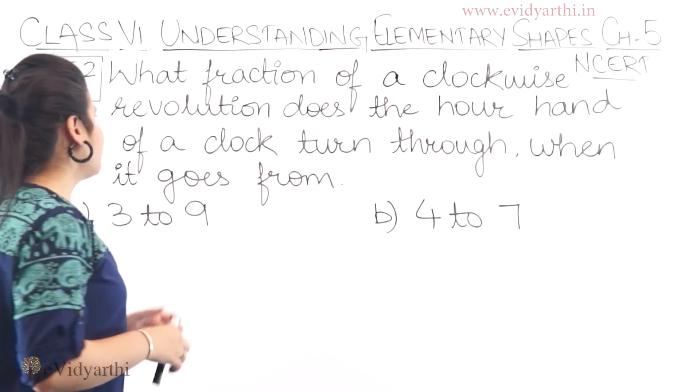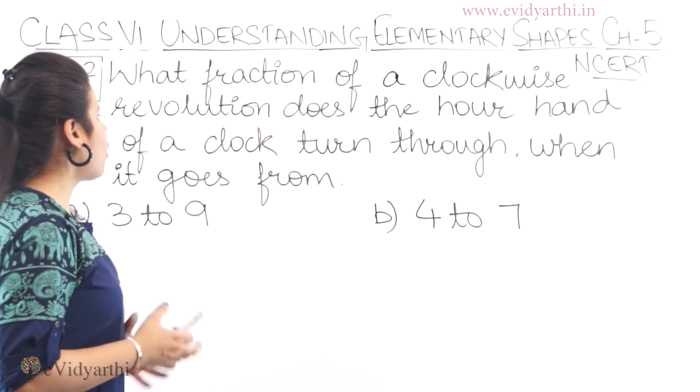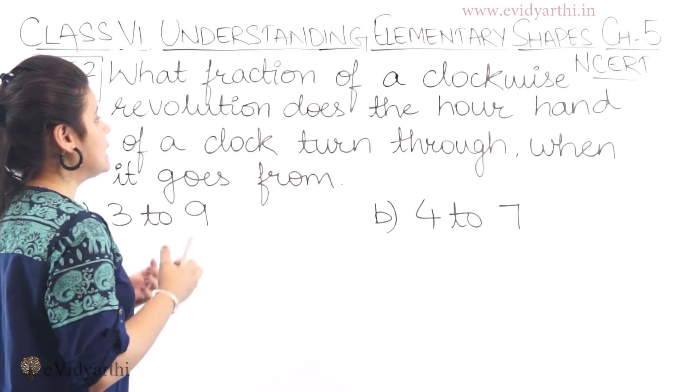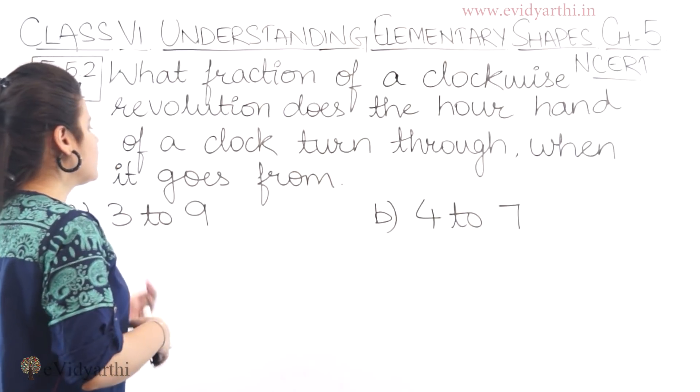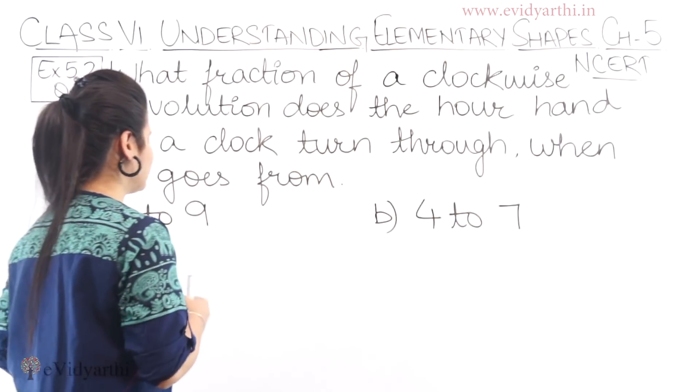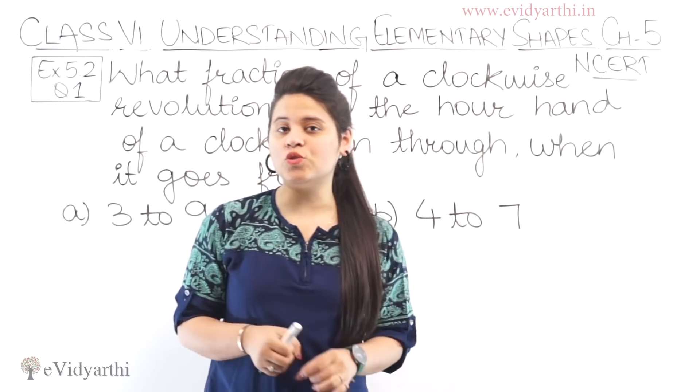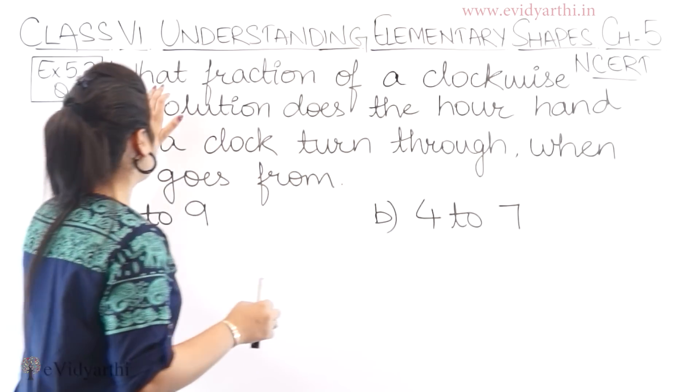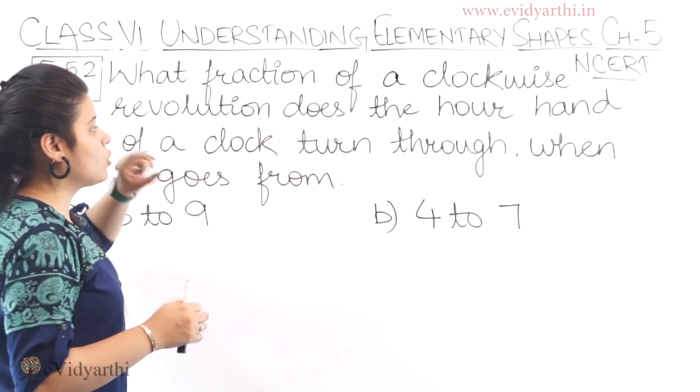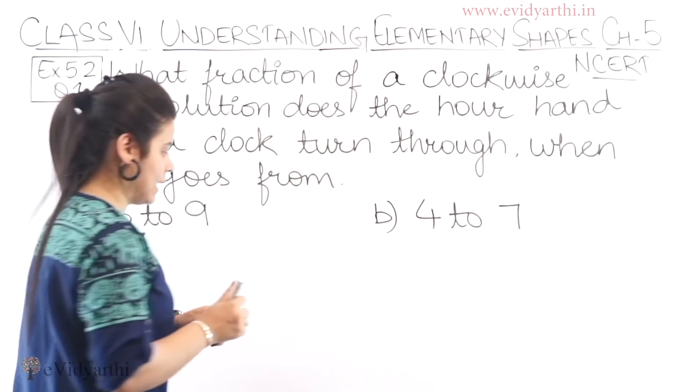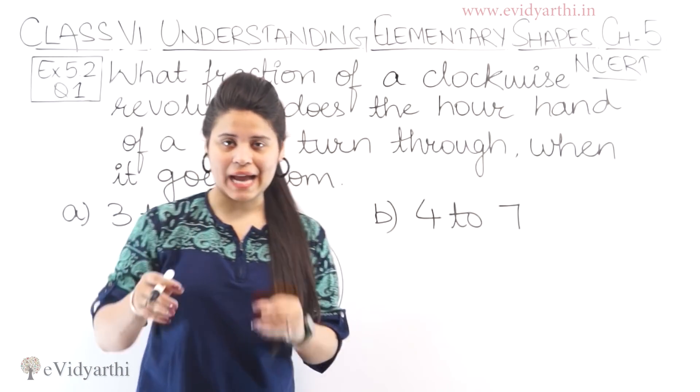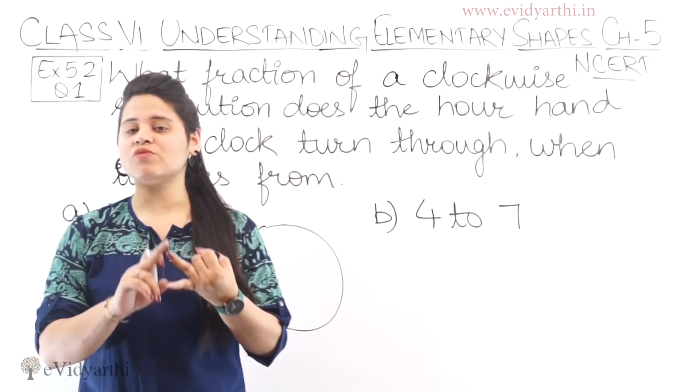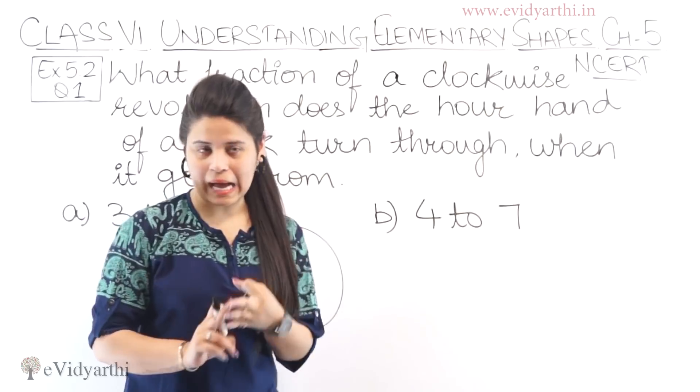In this question we have: what fraction of a clockwise revolution does the hour hand of a clock turn through when it goes from. The first thing we have to understand is what fraction of a clockwise is the hour hand. Now if this is a clock then we all need 3 hands. One is for the seconds and one is for the minutes and one is for the hour.